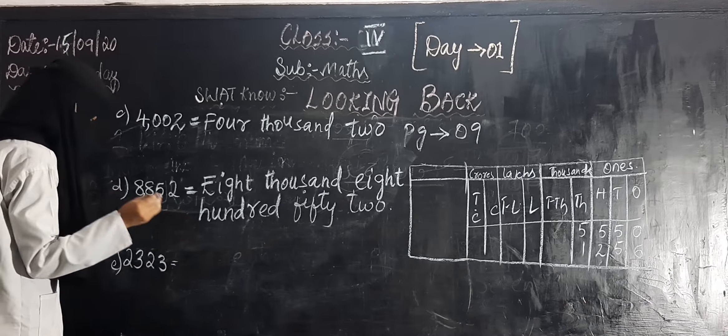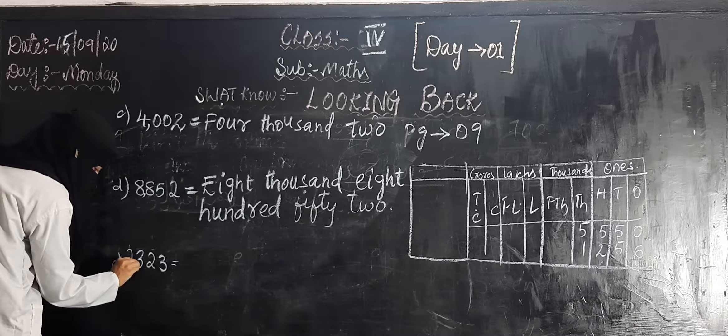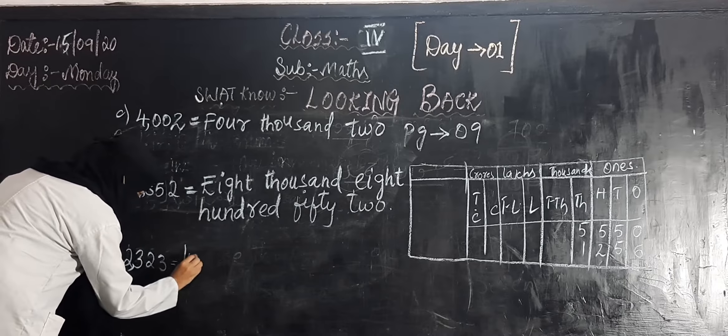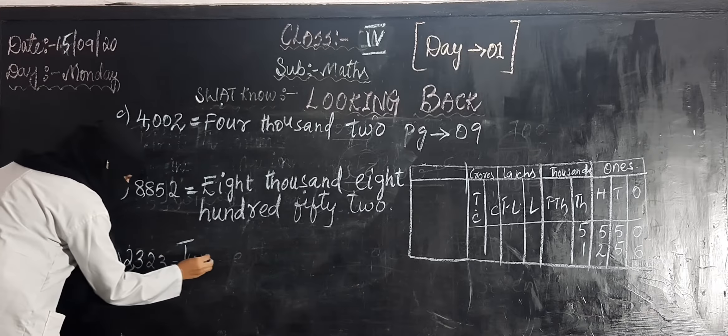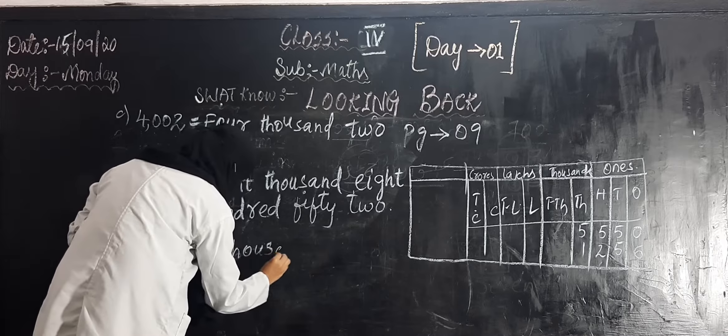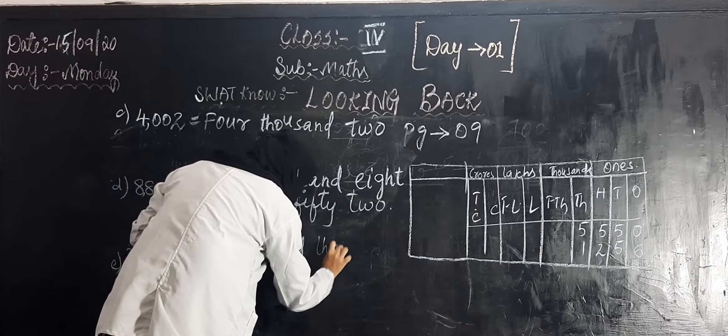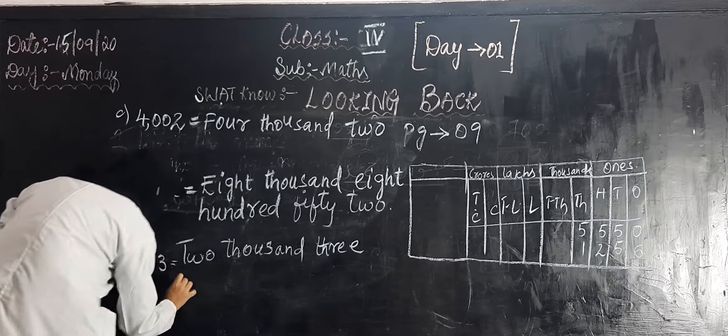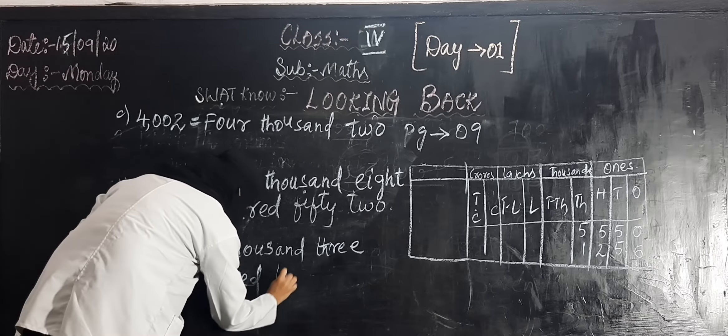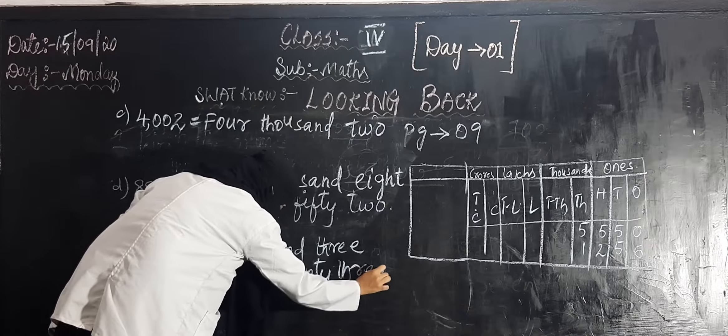The next thing, again you have to count the place value of a digit. After three, you have to put the comma. How many thousand is here? Two. Two thousand three hundred twenty-three.